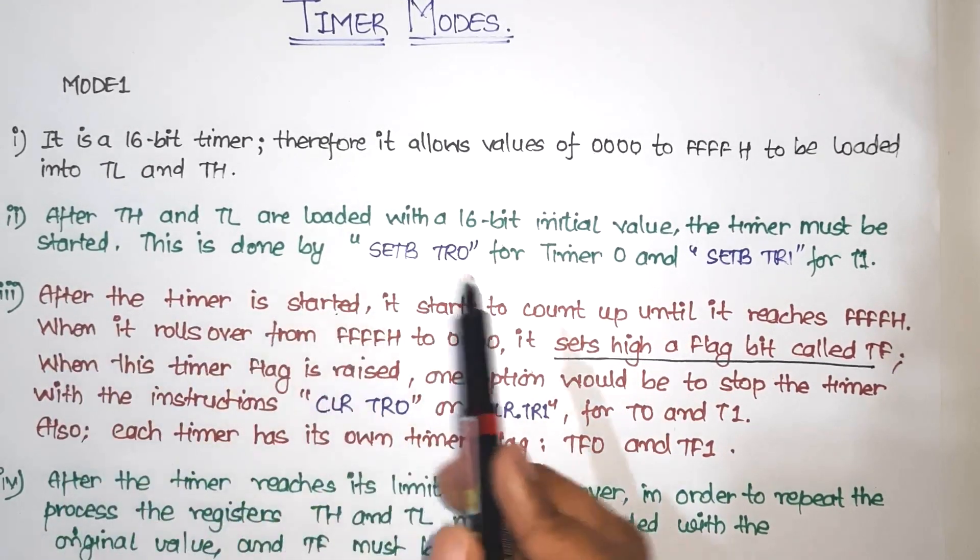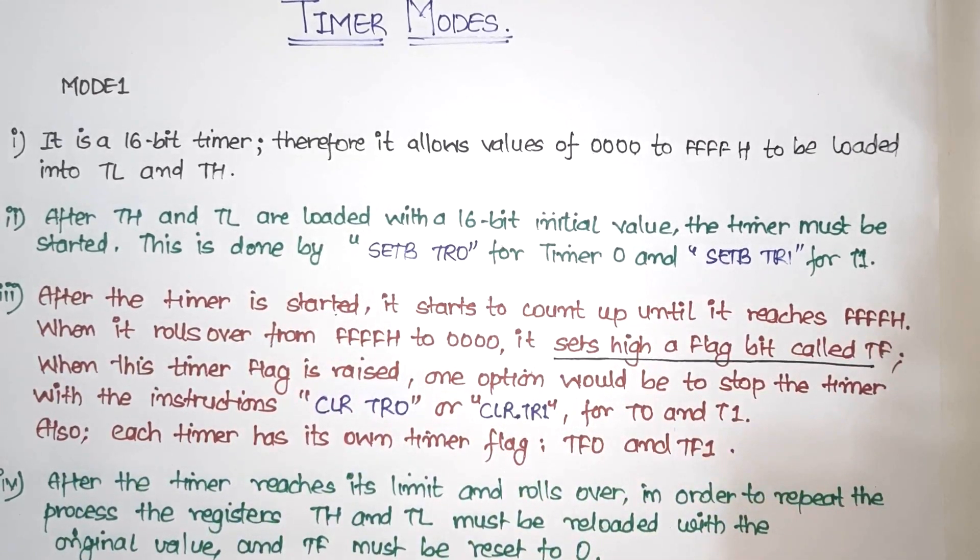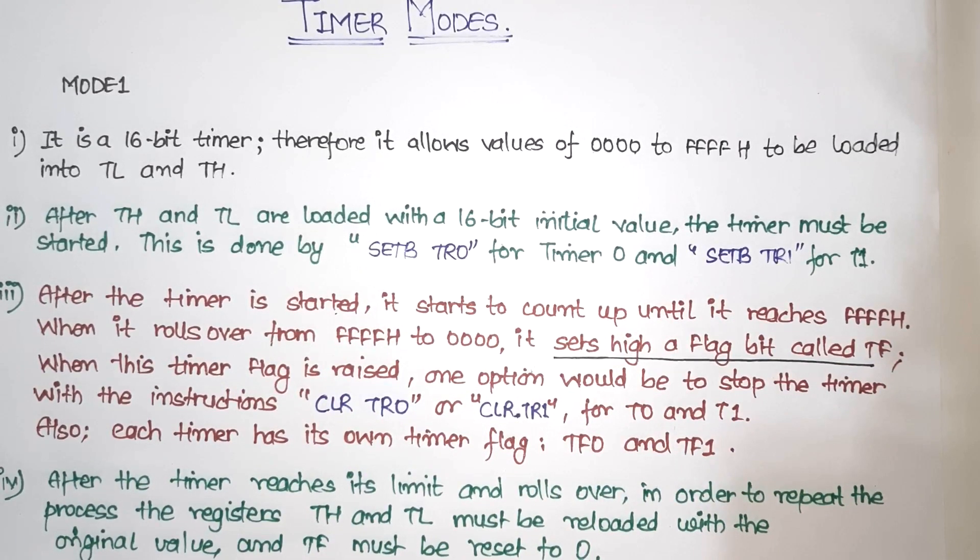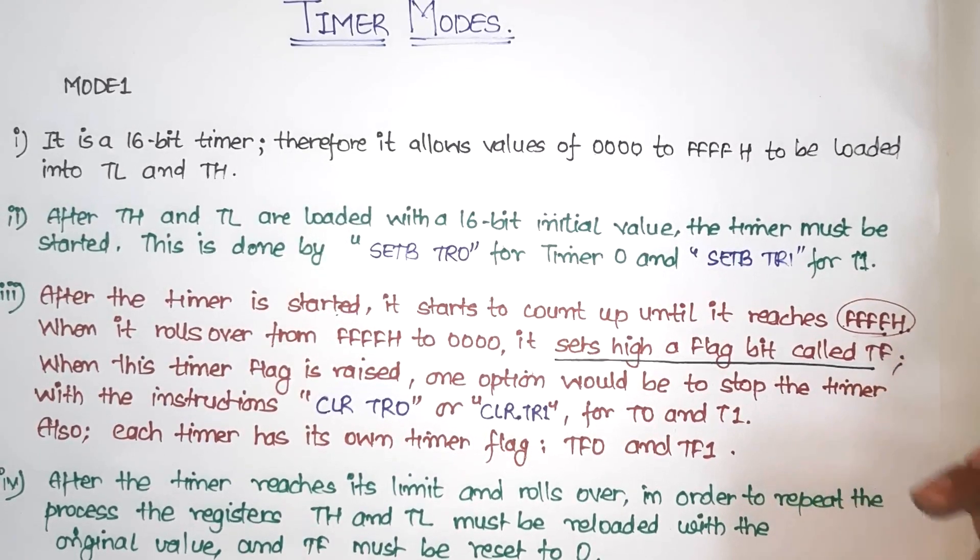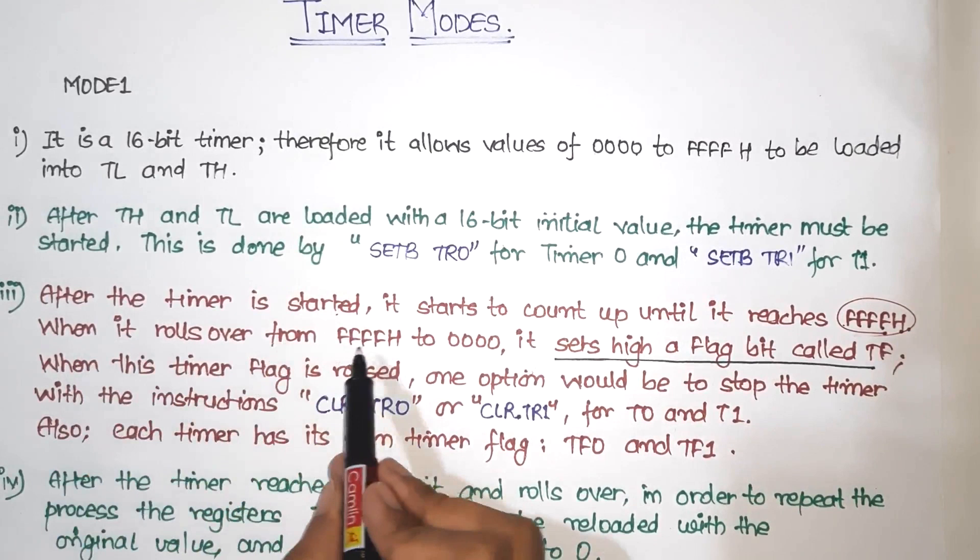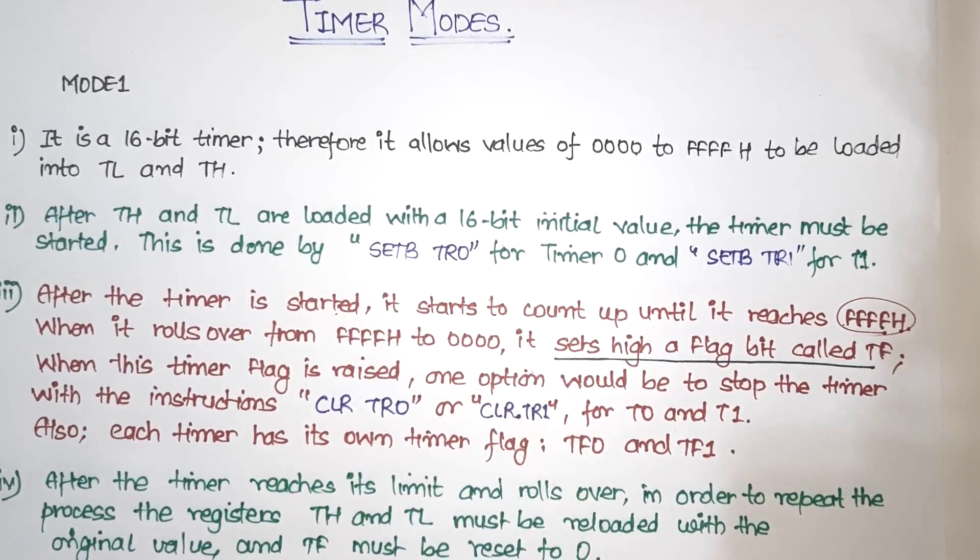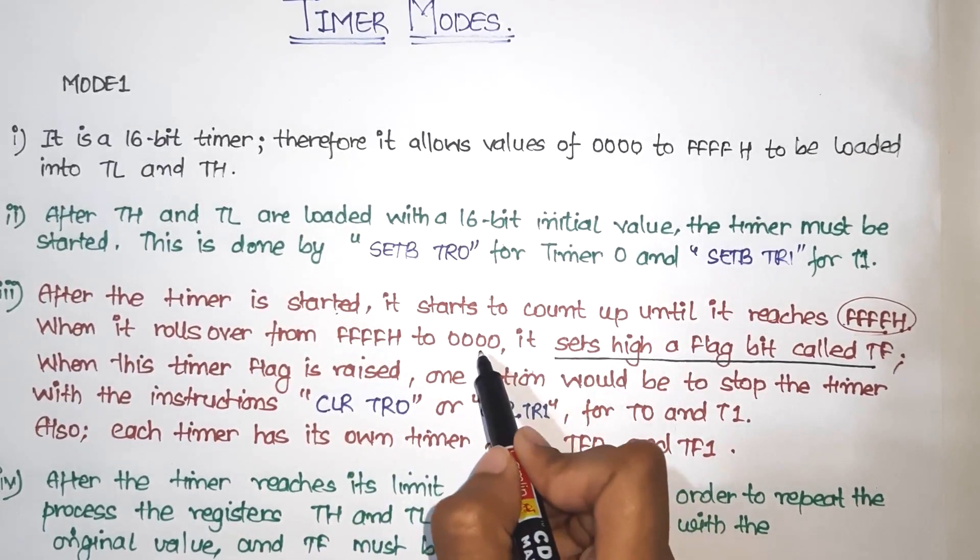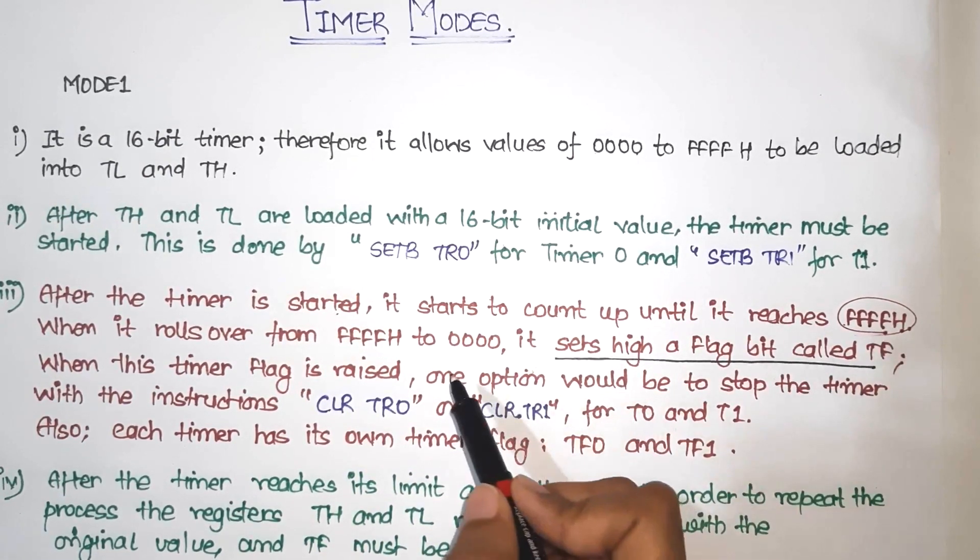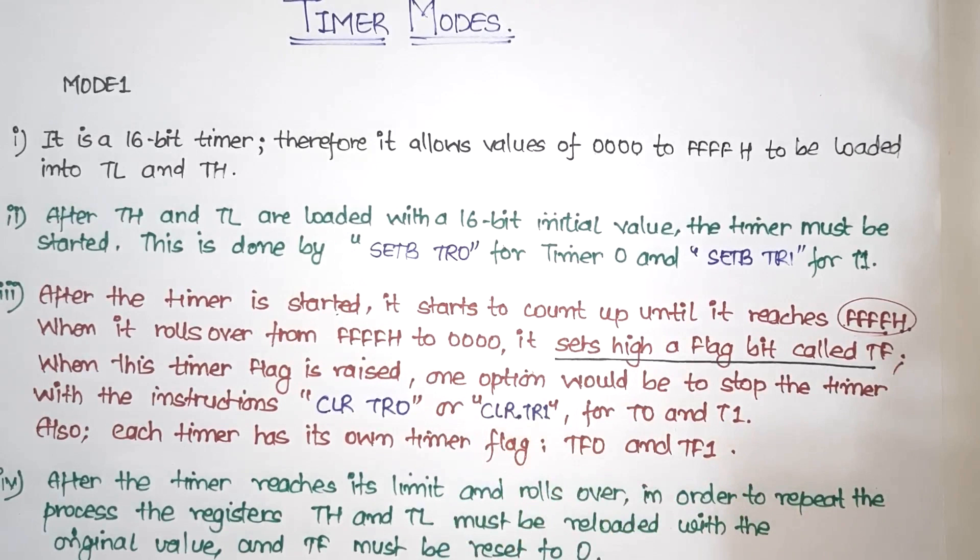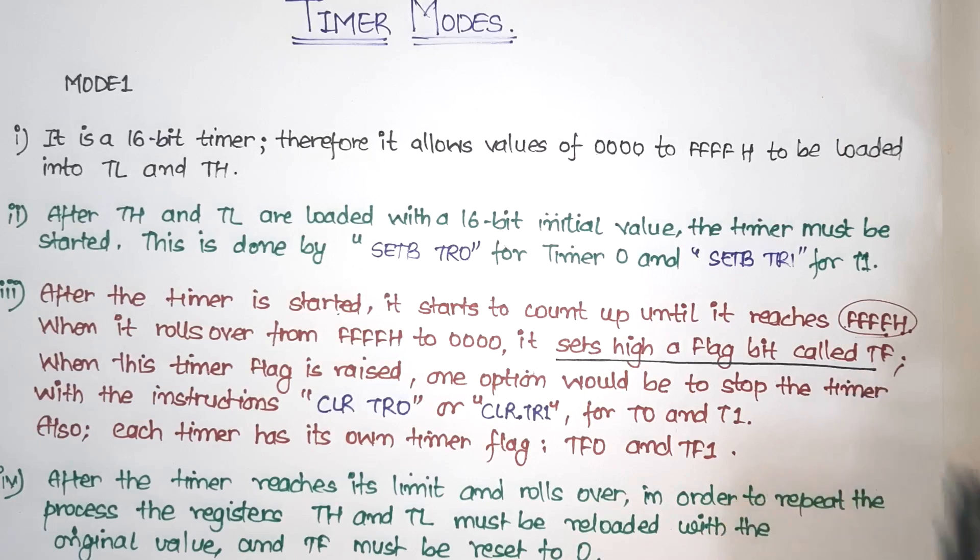After the timer is started, it starts to count up until it reaches FFFH. Because it is 16-bit, when it rolls over from FFFH to 0000, once it reaches its maximum value, it will again roll back to its initial value. So it will go back to 0000. So once it rolls over from FFFH to 0000, it will set a flag high called TF. So TF will be raised, it will be 1 now.